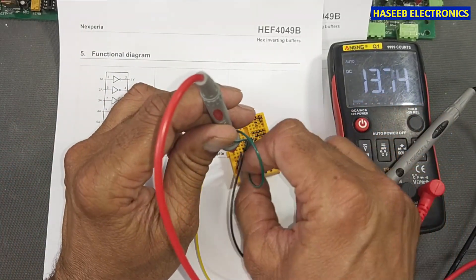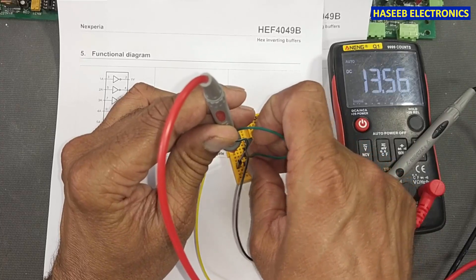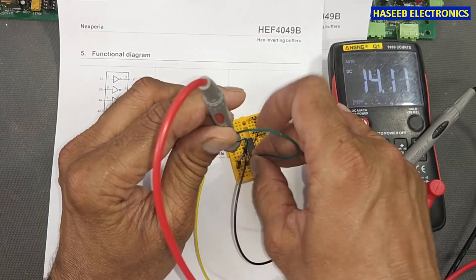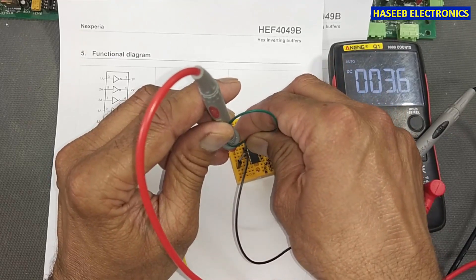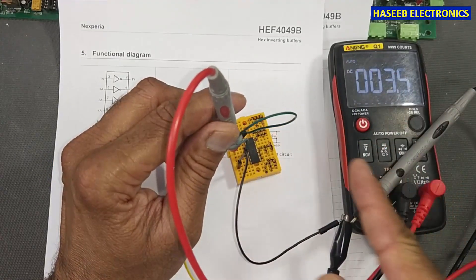I will connect the output to ground. It is now 14 volts. I will connect to positive voltage. When we apply high input, the output will be low because it gives inverted output.